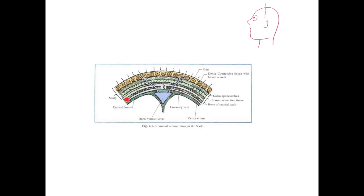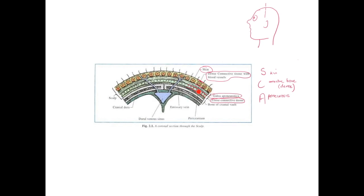Here we see the five layers of the scalp: skin, dense connective tissue — in which we find our arteries and veins supplying the scalp — then the aponeurotic layer, then beneath that the loose areolar connective tissue layer, and finally the periosteal layer of the bone.